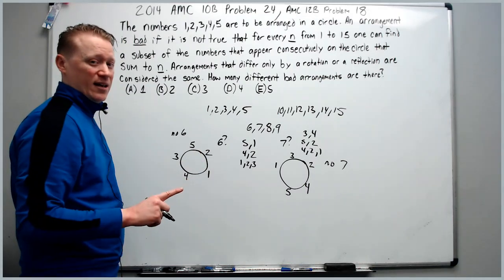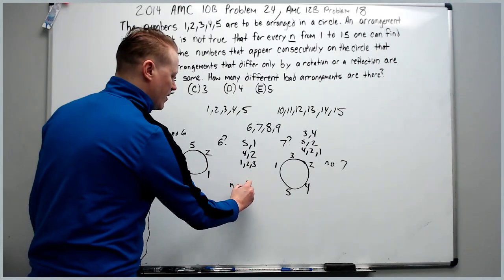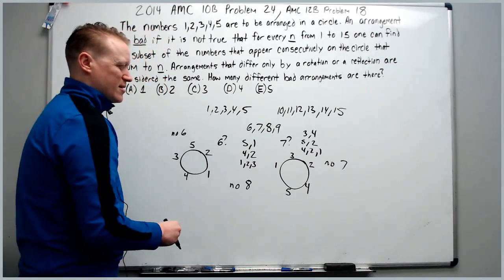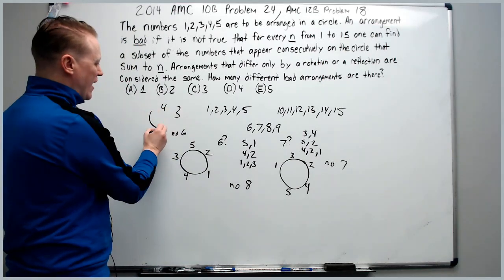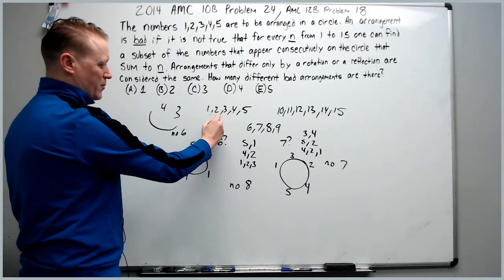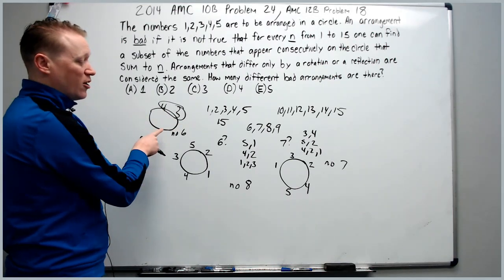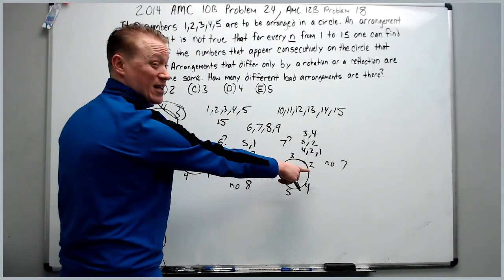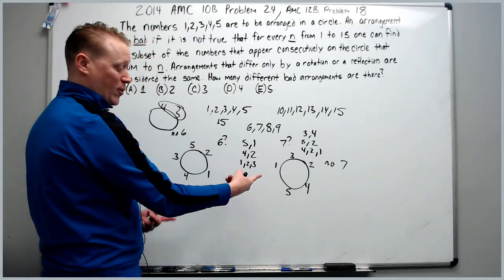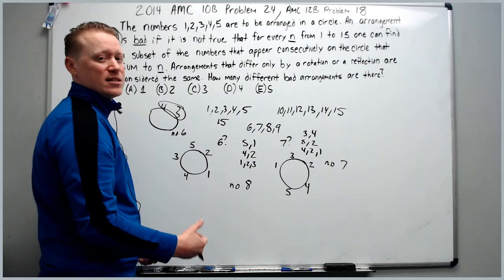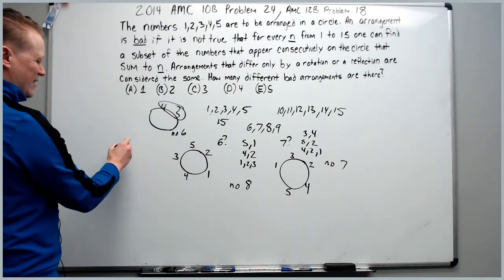Here's a key shortcut: if you target no 8, think about this — if a consecutive subset sums to 7, then since all five numbers sum to 15, the remaining numbers on the circle must sum to 8. So any time there's no consecutive subset summing to 7, there will also be no consecutive subset summing to 8. We don't actually have to check for 8 separately.